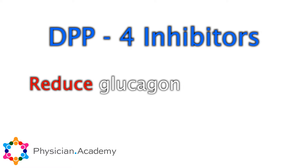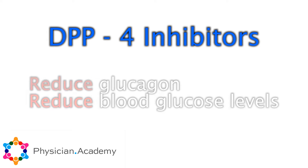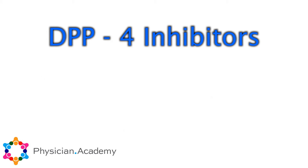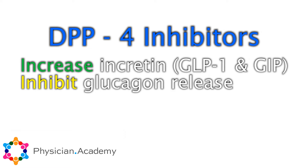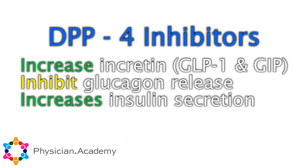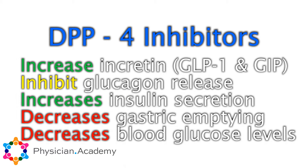The DPP-4 inhibitors reduce glucagon and blood glucose levels. DPP-4 inhibitors increase incretin levels — the GLP-1 and GIP — which inhibit glucagon release. In turn, this increases insulin secretion, decreases gastric emptying, and decreases blood glucose levels. All wonderful things in our type 2 diabetics.